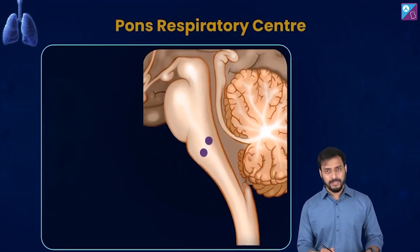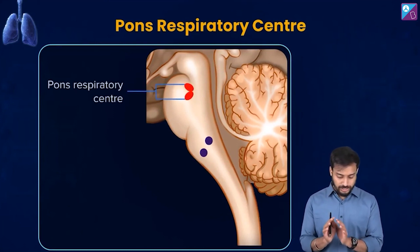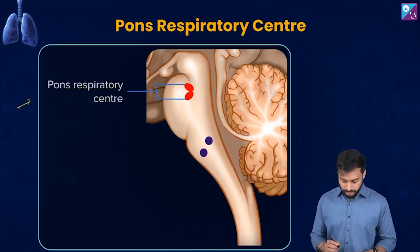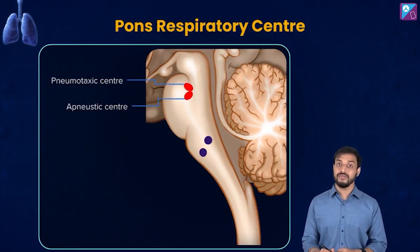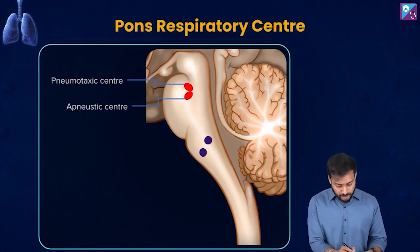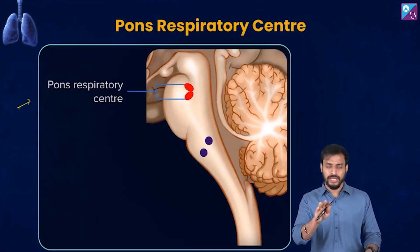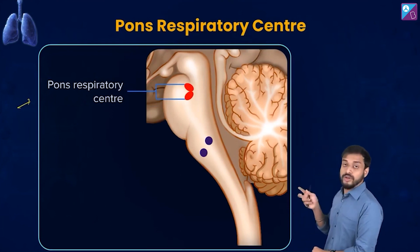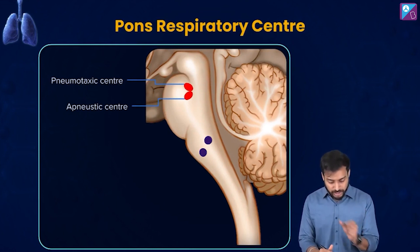Now let me talk about the pons respiratory center. This comprises two centers: the pneumotaxic center and the apneustic center. Note these down — the names are a bit difficult but you'll grasp them slowly. The pons respiratory center comprises the pneumotaxic center and the apneustic center.